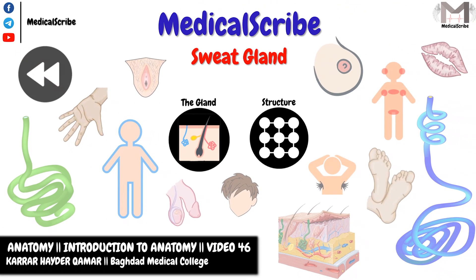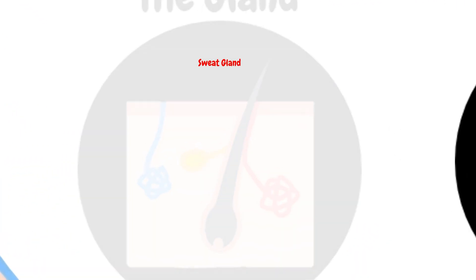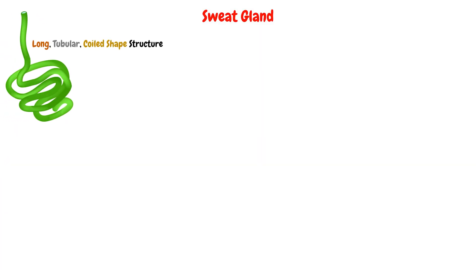Today we will talk about the third element in the skin appendages, which is the sweat gland. The sweat gland is a long, tubular, and coiled shape structure.